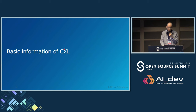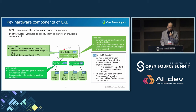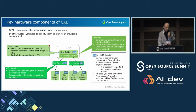Here is basic information of CXL. Here are the key hardware components that QEMU can emulate. You need to specify them to start your emulation environment. The first is the host bridge — the root of the connection tree for CXL devices, equivalent to the host bridge in PCI Express, and typically integrated into the CPU. The next is the root port — the downstream connection port of the host bridge. In the emulation setting, this defines how CXL objects are connected.